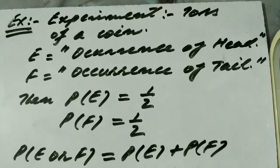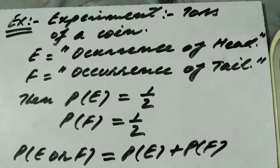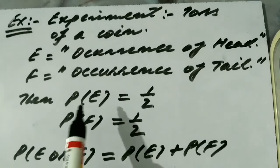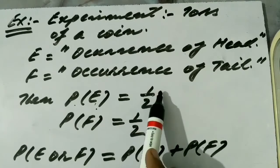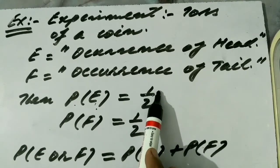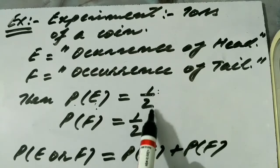So here E and F are two mutually exclusive events. Since the occurrence of head has only one favorable outcome — that is, head — and the total number of outcomes are only two, that is head or tail, according to the definition of probability: number of favorable outcomes upon total number of possible outcomes. So P(E), the probability of head, is one upon two, so P(E) is half.